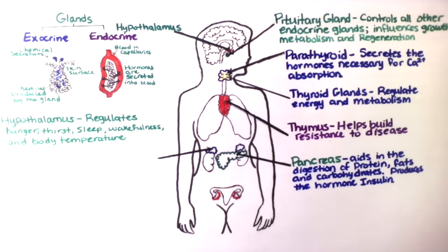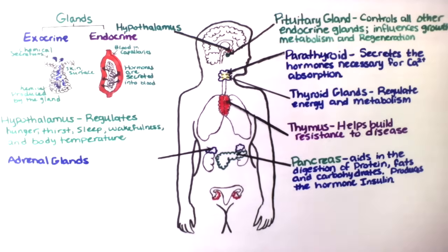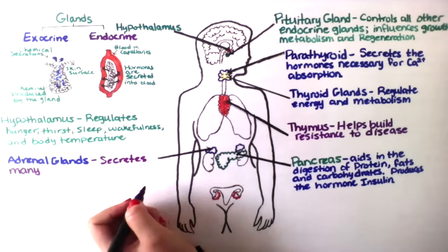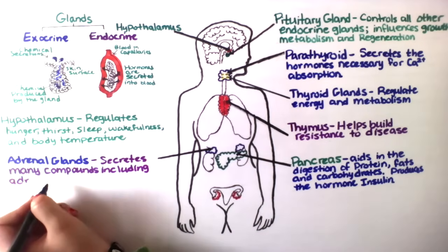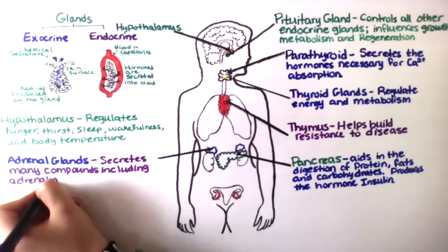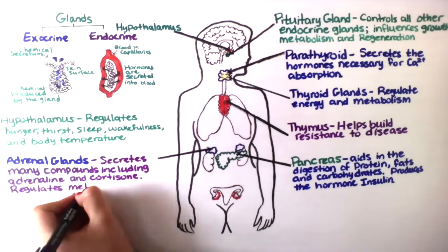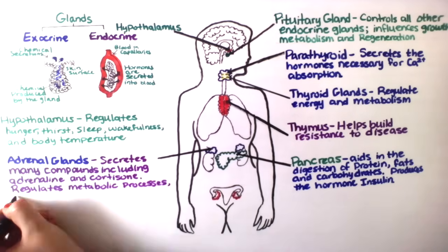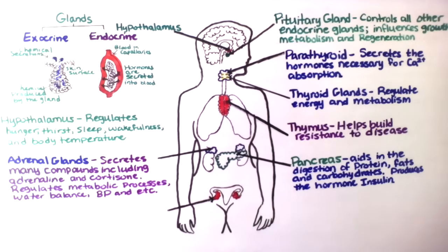The adrenal glands are located on top of the kidneys — hence the name adrenal, meaning above kidneys. They control the fight or flight response. The adrenal glands release adrenaline and cortisone, and regulate metabolic processes, water balance, blood pressure, and many other things.